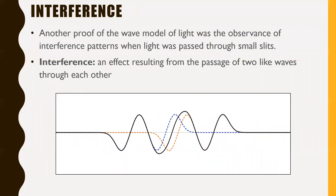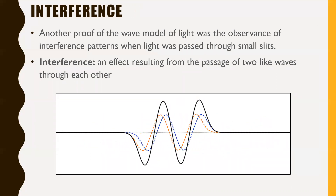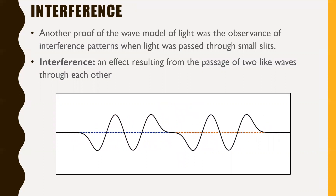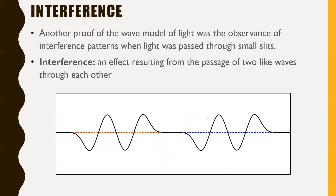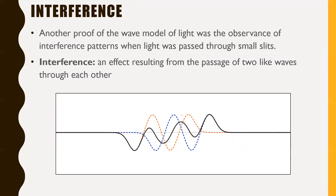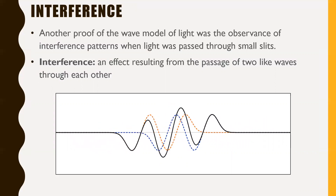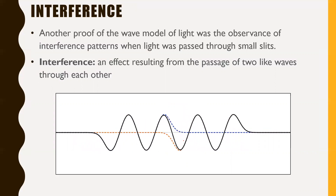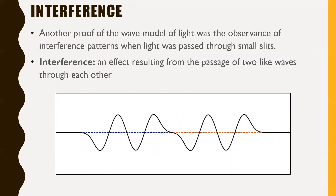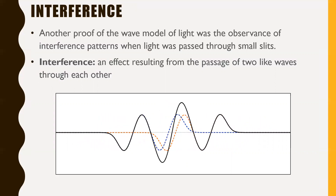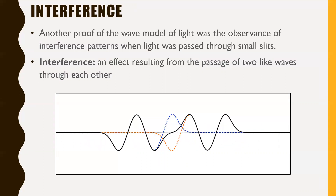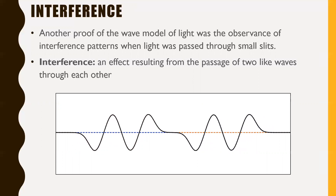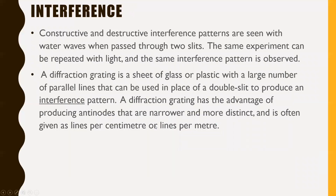Another proof of the wave model of light was the observance of interference patterns when light is passed through small slits. Interference is an effect resulting from the passage of two like waves through each other. There's constructive interference, where waves combine to go really big, and destructive interference, where they nullify and cancel each other out. Both constructive and destructive interference also occur with light, expressed in the intensity of the light — a very bright spot is a place of constructive interference, and a very dark spot is a place of destructive interference. A diffraction grating is a sheet of glass or plastic with a large number of parallel lines that can be used in place of a double slit to produce an interference pattern.